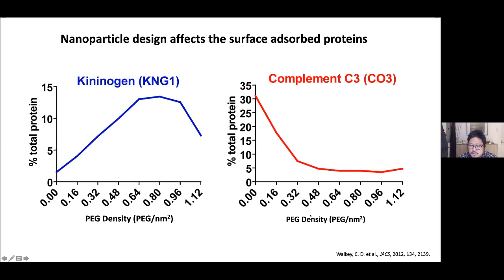To show two examples from another paper: if you coat the surface of your gold nanoparticle with different PEG densities, you will have different amounts of certain proteins. At high PEG density (high PEG per nm²), you have a lot of vitronectin adsorbed onto the surface, but less complement C3. At very low PEG density, you have a high amount of complement C3, but as PEG density increases, you see less and less C3. This shows that surface chemistry impacts what type of proteins adsorb and how much.